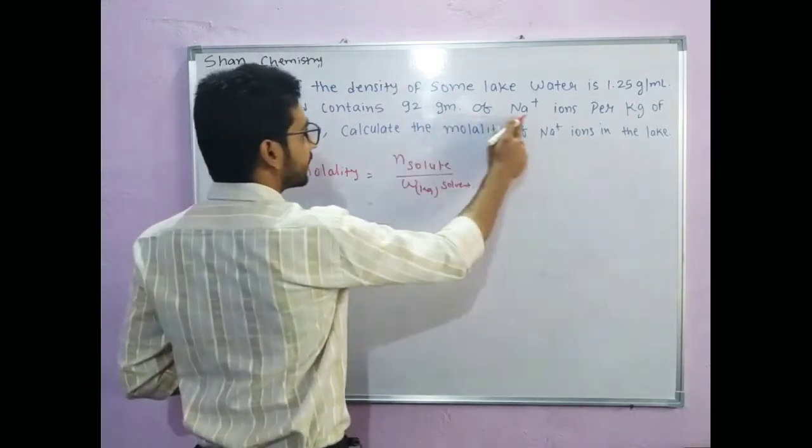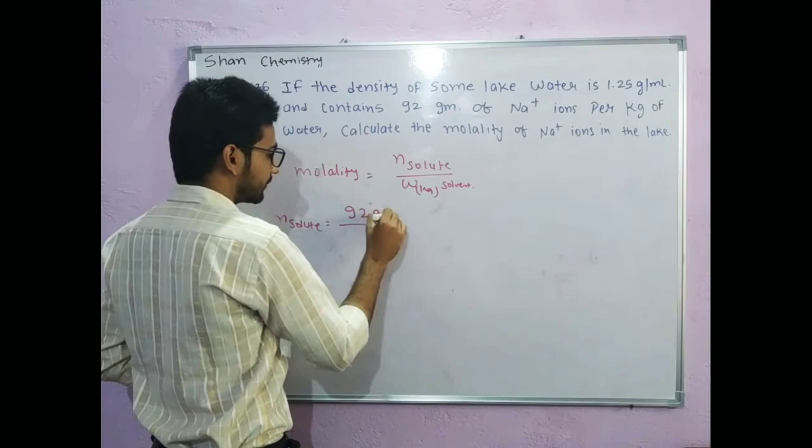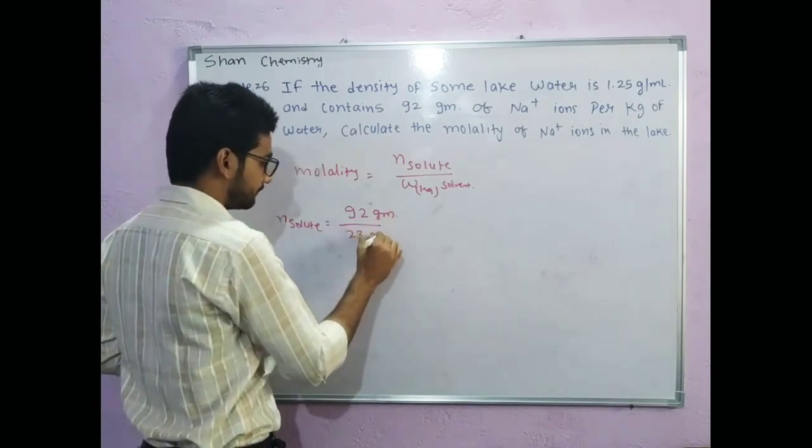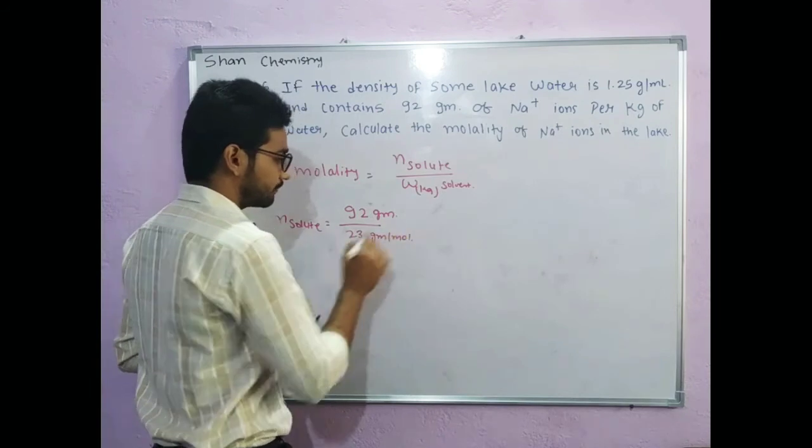The question says 92 gram of sodium. So given mass is 92 gram of sodium. Molar mass, how much is sodium? 23 gram per mole.